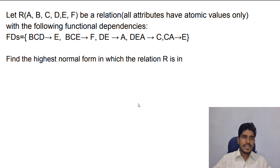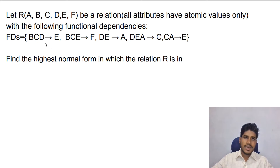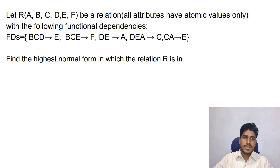Let us see another example. Let R(A, B, C, D, F) be a relation with the following functional dependencies: B, C, D determine E; B, C, E determine F.